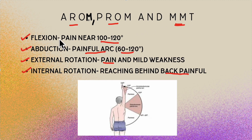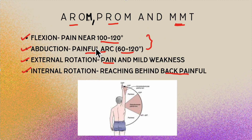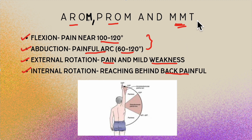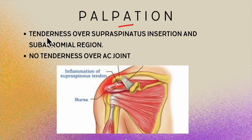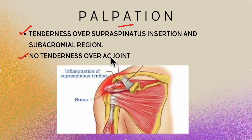On manual muscle testing for flexion and abduction, it was pain-limited — rather than true weakness, the patient was limited by pain. So it was pain-limited weakness observed in flexion and abduction. In external rotation, there was definite mild weakness, while internal rotation was preserved but painful during testing. On palpation, there was tenderness over the supraspinatus insertion region and the subacromial region, but no tenderness over the acromioclavicular joint.